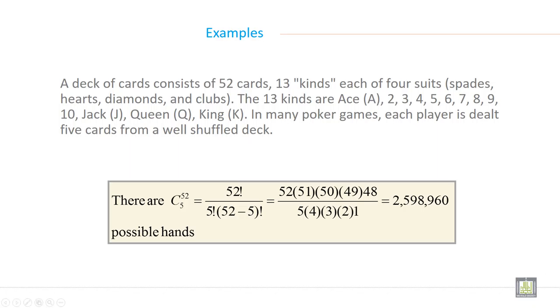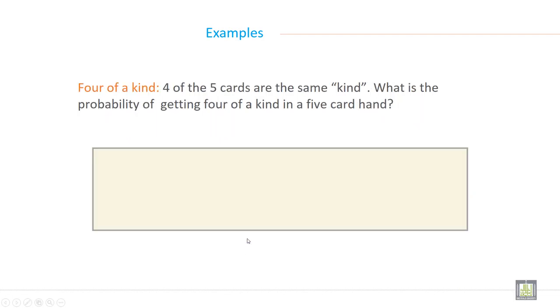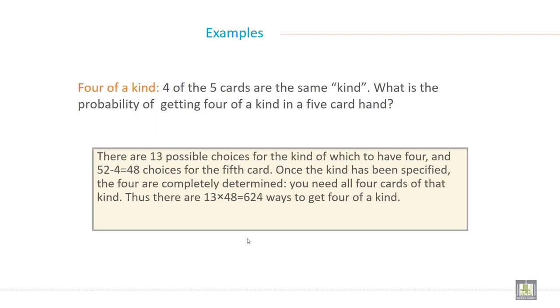So there are C(52,5) = 52! / (5! × (52-5)!) = 2,598,960 possible hands.